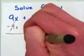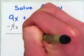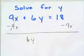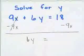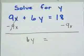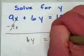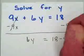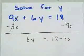6y equals, and now I have to take a look at my right-hand side. 18 and negative 9x are not like terms, so I can't do anything there. I just simply have to write 18 minus 9x. I can't combine terms that are not like terms.